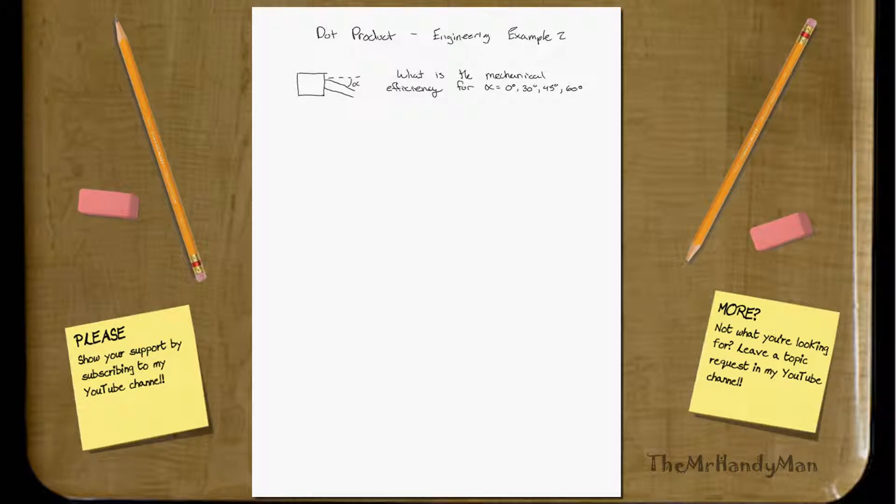Hi there, this is Dot Product Engineering Example 2. I wanted to walk through what I'm going to call mechanical efficiencies for U-joints.